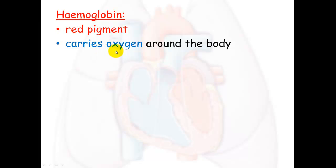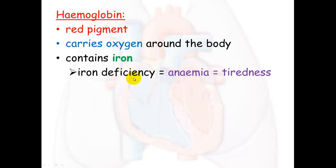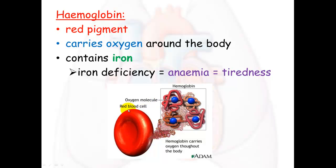Hemoglobin is a red pigment and it's what gives blood its red color. It carries oxygen all around the body and it contains iron, which is very important for red blood cells. Iron deficiency can lead to something called anemia, which causes you to become very tired because you're not getting enough oxygen transported around the body. Here is a picture of a red blood cell showing hemoglobin complexes on the outside, which carry oxygen molecules within them — that's how oxygen gets transported.